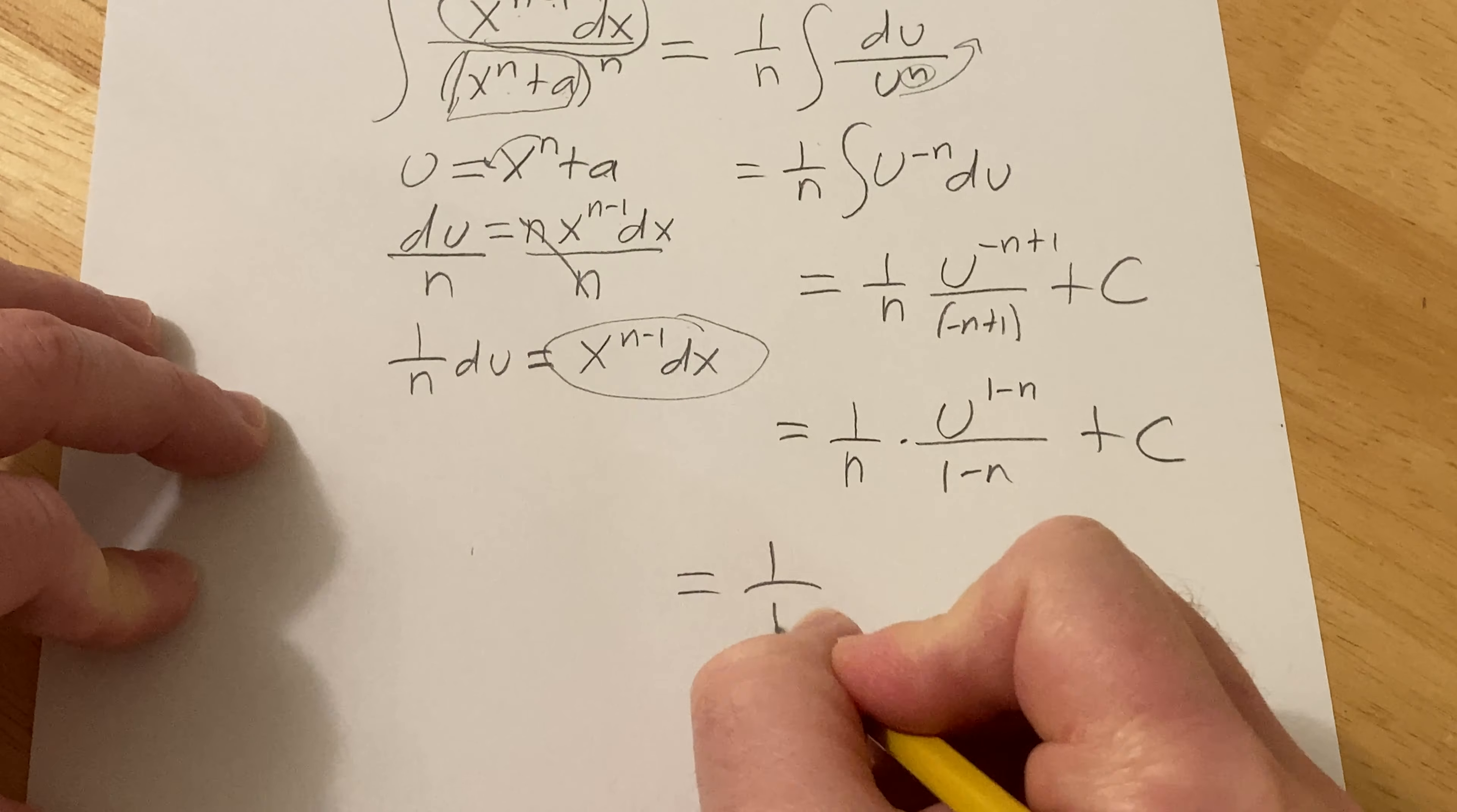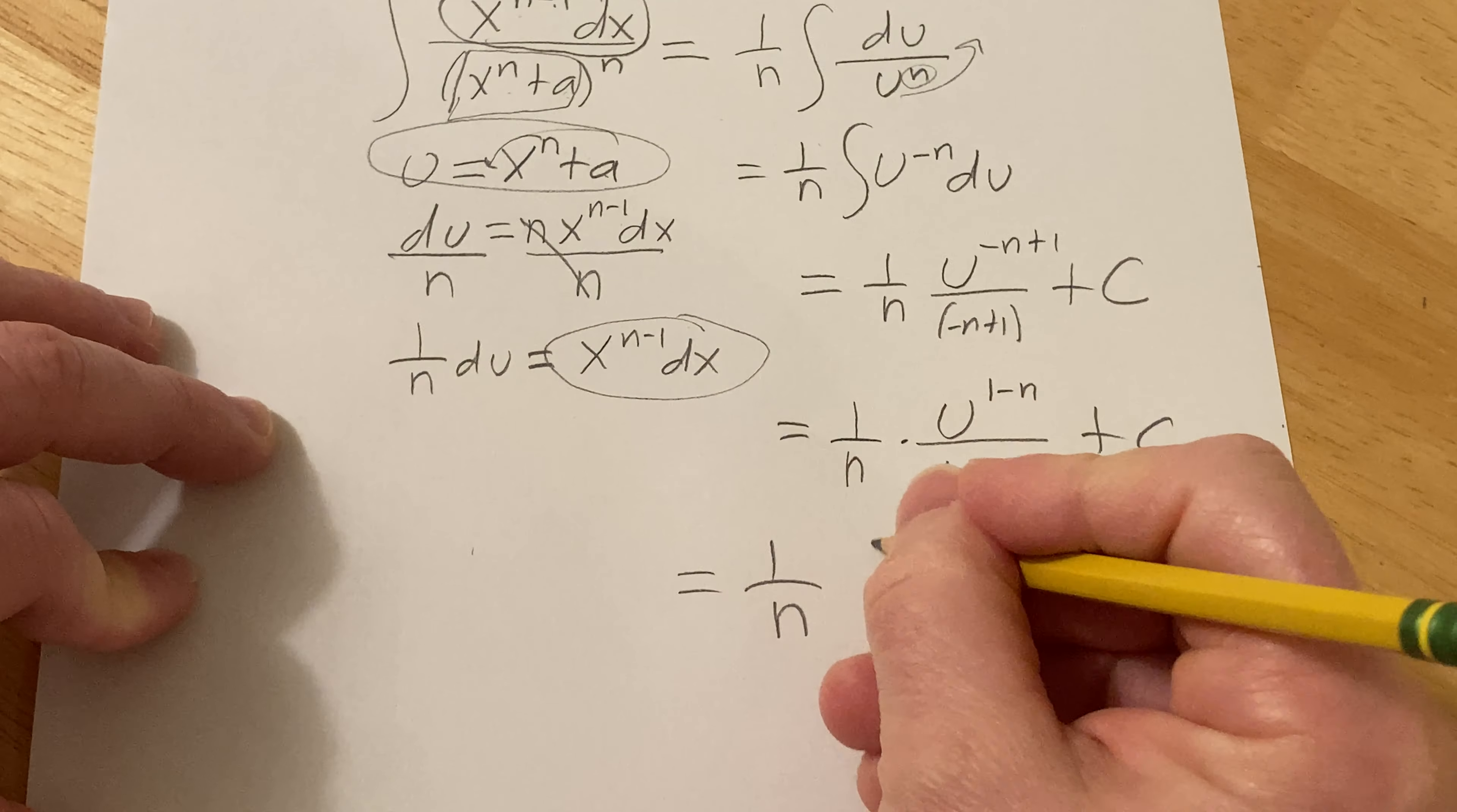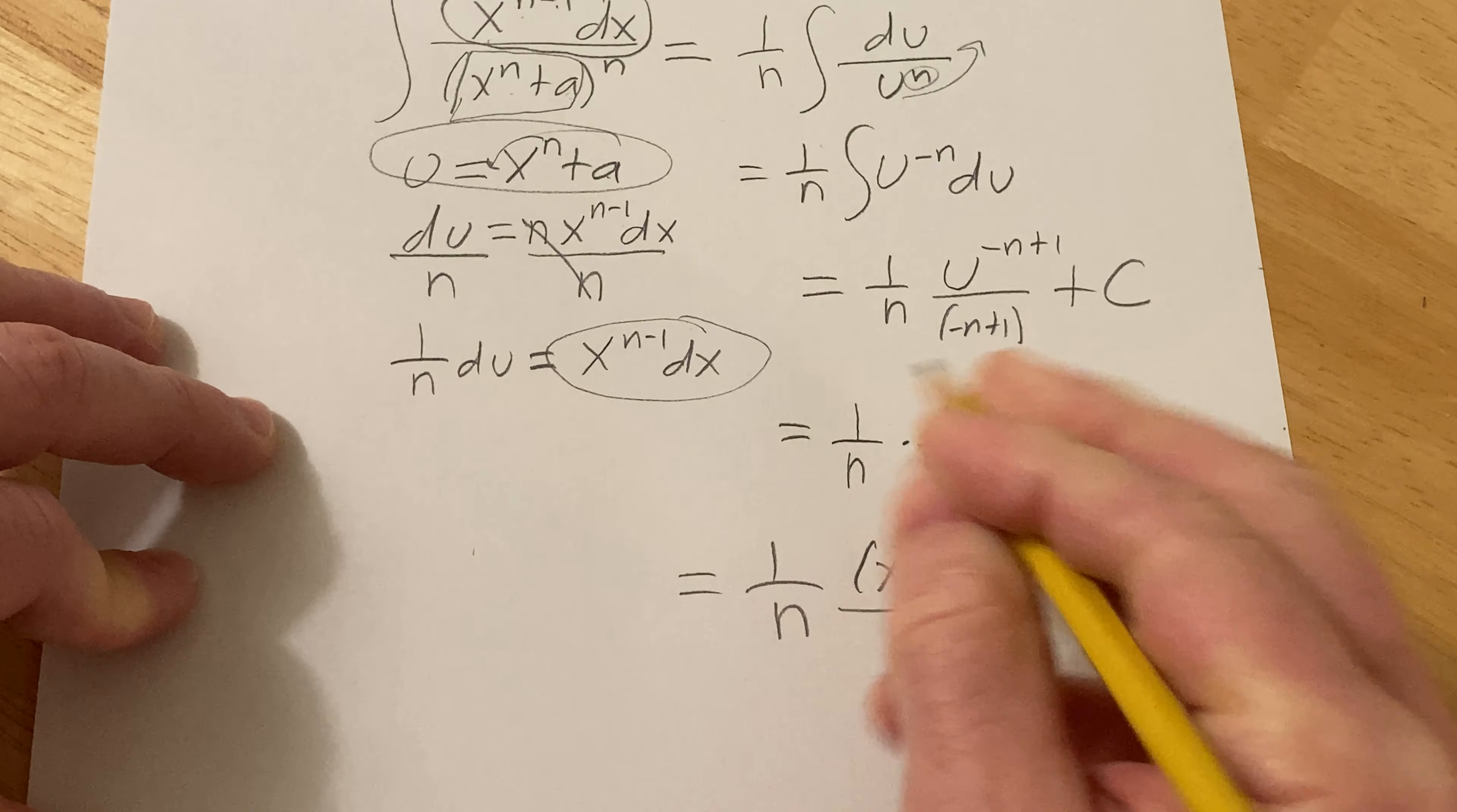So this is equal to 1 over n and then u, u is right here it's x to the n plus a. So this is x to the n plus a to the 1 minus n over 1 minus n plus the constant.